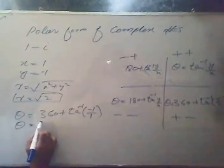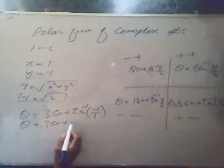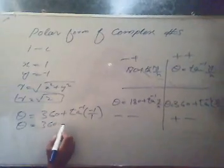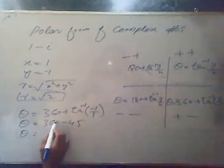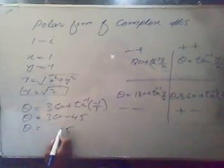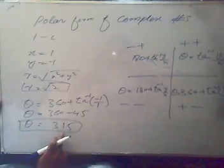And now theta will be 360 plus tangent inverse of y over x. Now y is minus 1, x is 1. So we'll have theta is equal to 360 plus tangent inverse of minus 1 will be minus 45. So if we subtract that, we will get 315.